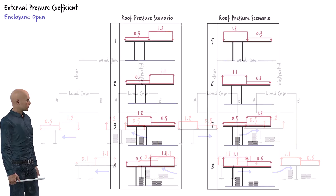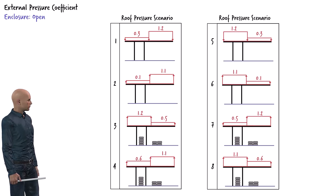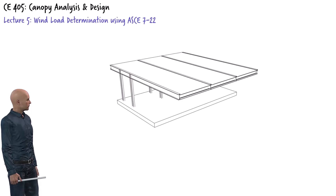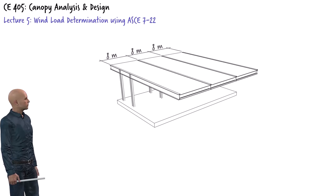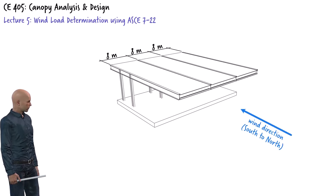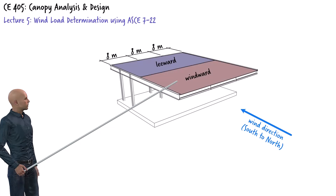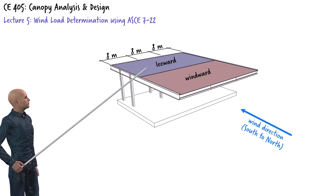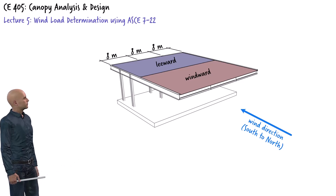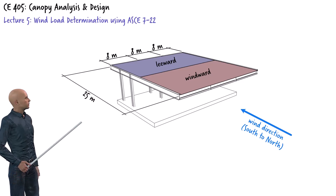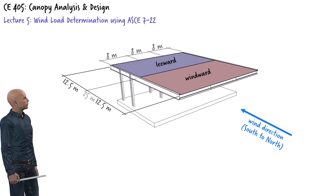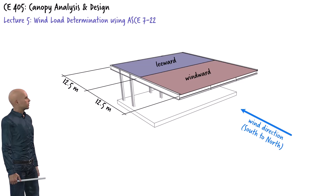Let's number these roof pressure scenarios from 1 to 8. Here is a three-dimensional view of an open segment of the bus terminal. The roof of this segment is supported by four frames, spaced 8 meters apart. Assuming wind blows from south to north, this becomes the windward side of the roof and this the leeward side. According to the ASCE standard, each zone occupies half the area of the roof. Given that the total width is 25 meters, each zone is 12.5 meters wide. We can represent the pressure acting on each zone as a block.